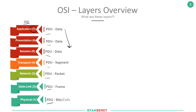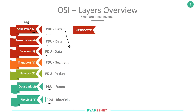Starting with the application layer — essentially it provides the initial network connection for user applications, and it allows the applications to connect into the network. This is where your end users actually sit. We've previously discussed the concept of networking applications, and we agreed that a networking application is an application that uses some protocol — in this case, let's say HTTP or SMTP — to interact with the network.